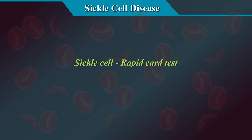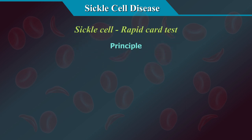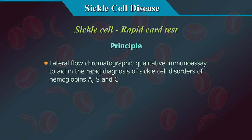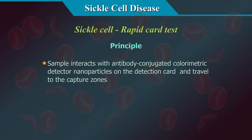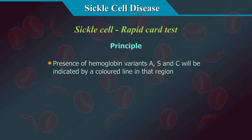The sickle scan rapid card test is a lateral flow chromatographic qualitative immunoassay to aid in the rapid diagnosis of sickle cell disorders of haemoglobins A, S, and C. A small amount of blood is placed into the buffer-loaded pre-treatment module to release haemoglobin by lysing the erythrocytes. The sample then interacts with antibody-conjugated colorimetric detector nanoparticles on the detection card, travelling to the capture zones, where the presence of haemoglobin variants A, S, and C is indicated by a coloured line.